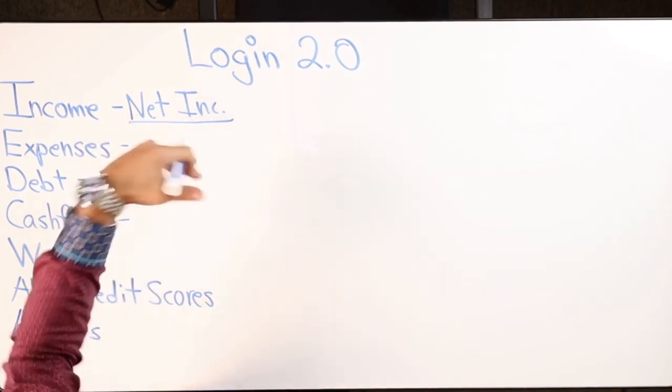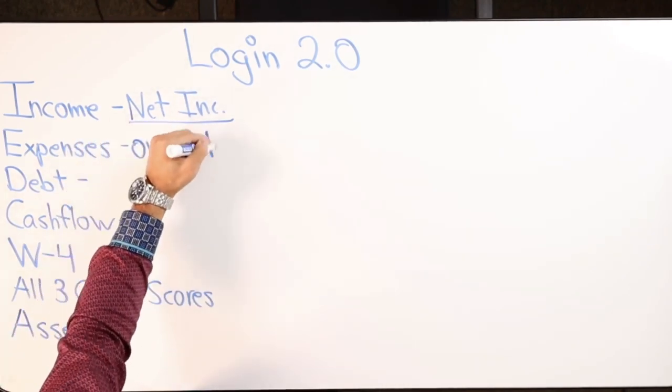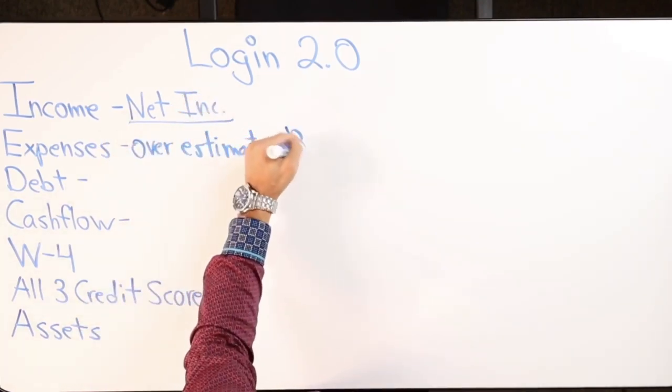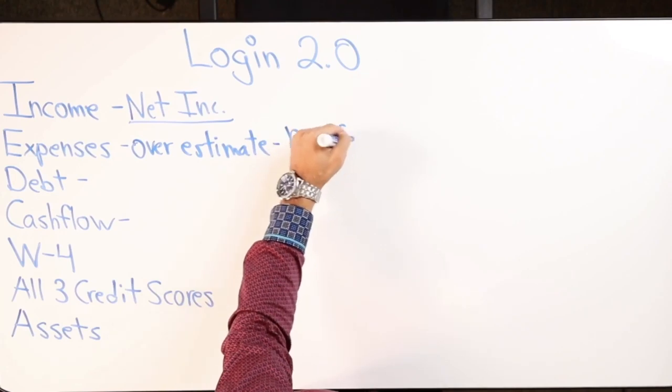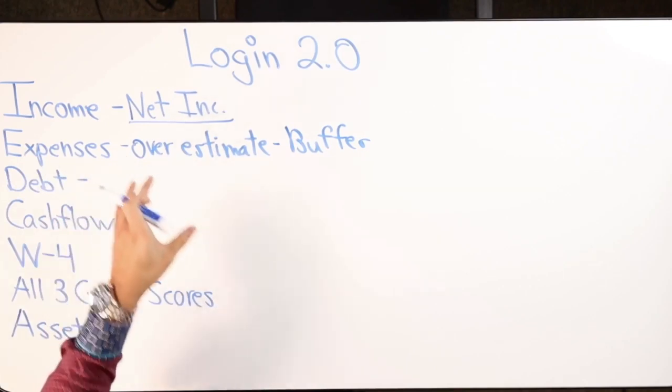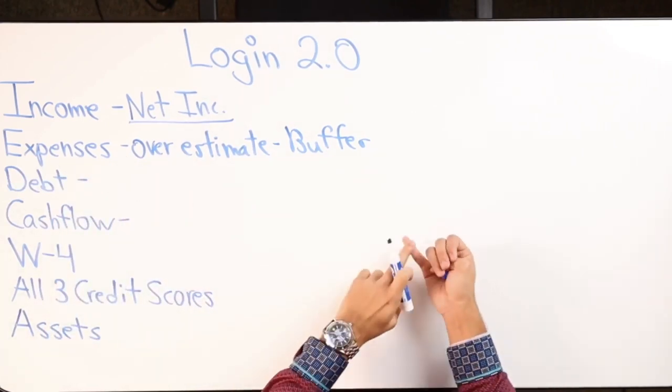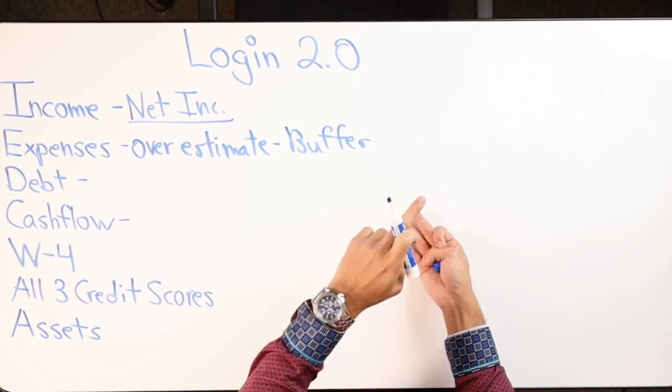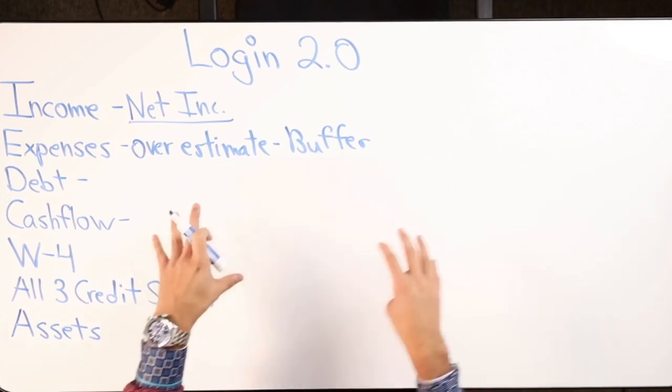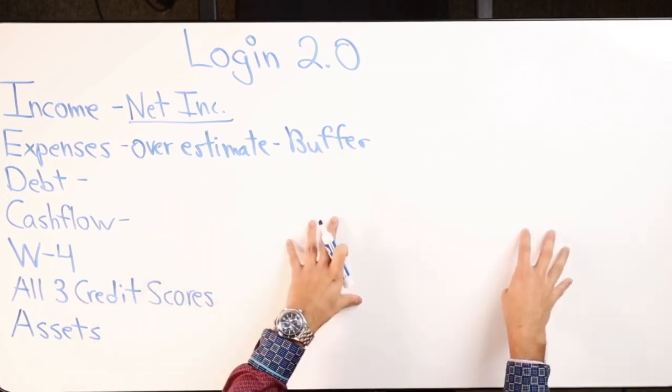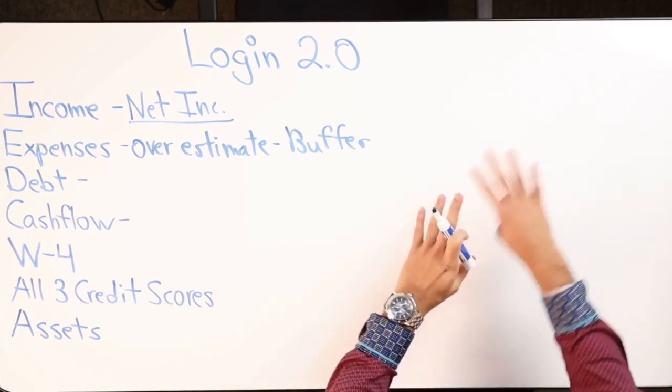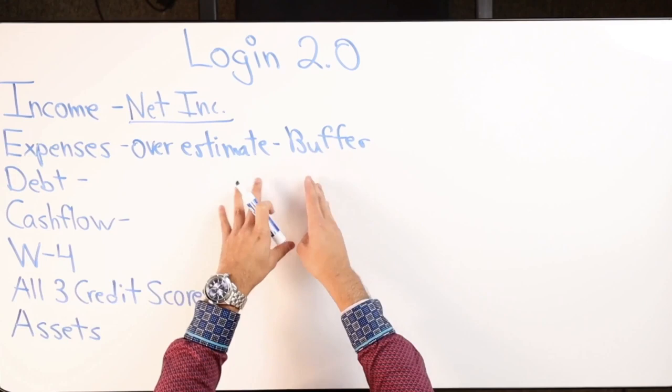Expenses, I need you to overestimate this. You never know what's going to happen, so it's nice to have a, what I like to call, buffer. So I need to know what do you spend per month? This is everything. Your living expenses, household expenses, bills, debt payments, everything that leaves your checking account is an expense. Include the savings, include the investing. If you're not doing none of that, don't worry. Just overestimate the number.